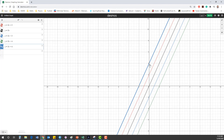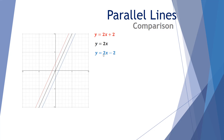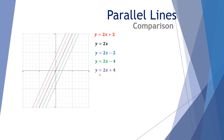The only difference between these five linear equations is the movement up and down the y-axis. Here is the first graph in red, y equals 2x plus 2 — gradient of 2 and intercept at 2. Adding to that: y equals 2x, y equals 2x take 2, y equals 2x take 4, and y equals 2x plus 4. Each one of these lines has exactly the same gradient.